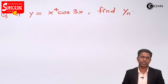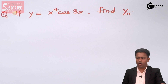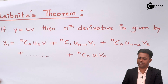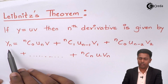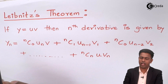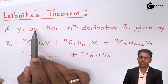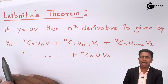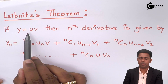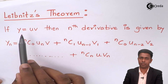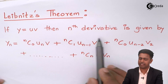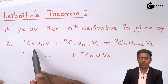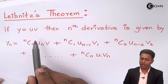On this screen you can see the Leibniz theorem. Whenever we have two functions u and v, both functions of x, and they are multiplying each other, then by Leibniz theorem the nth derivative is given by this formula. We will require one term as u and one term as v.